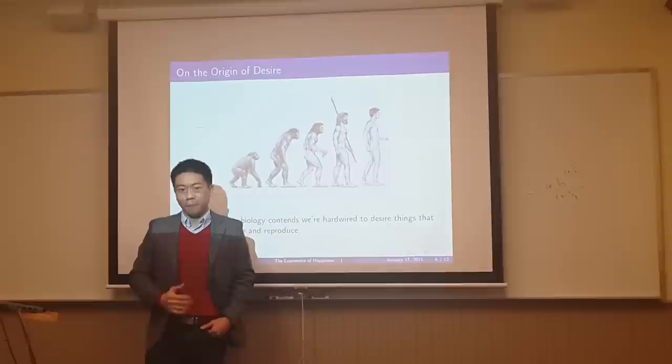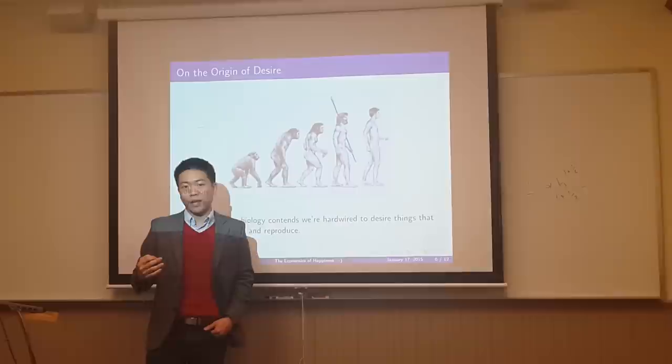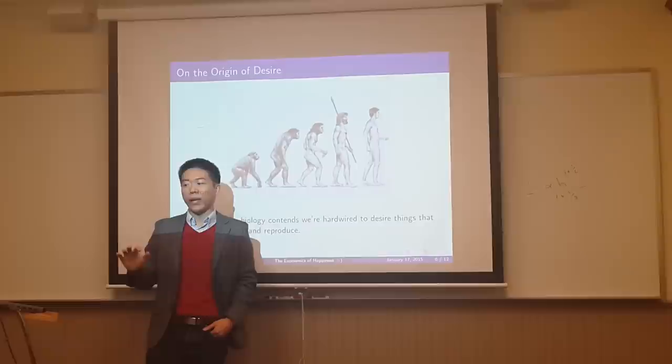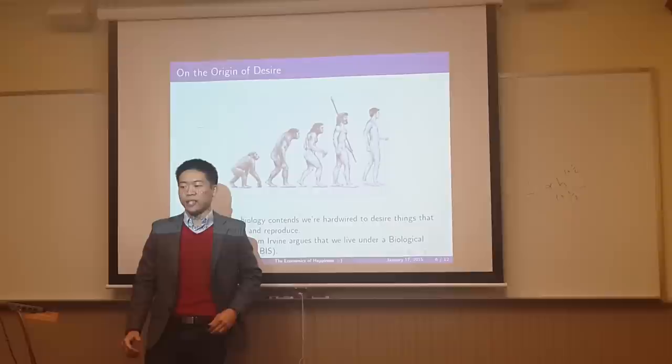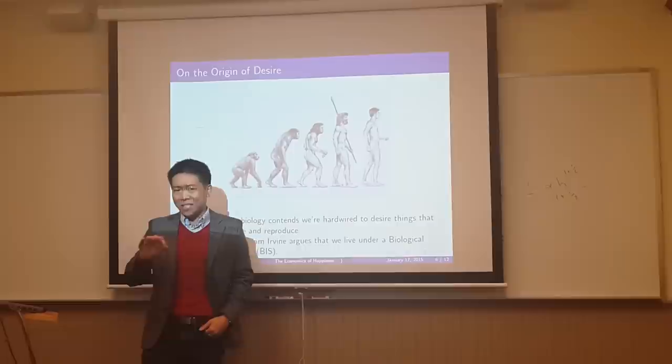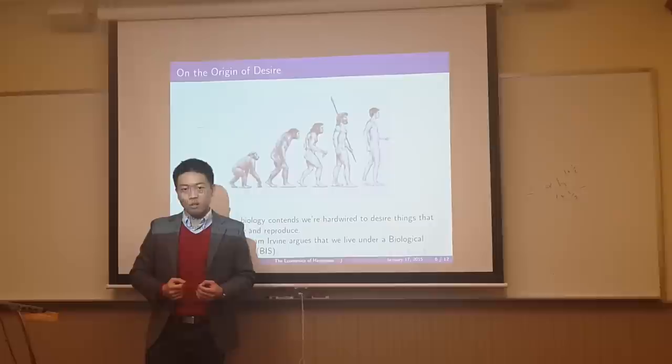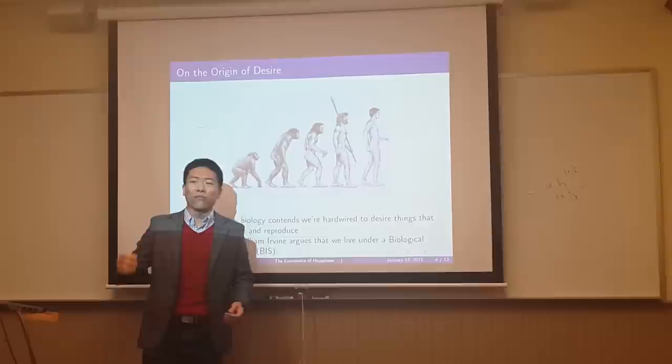But if you turn to science for answers, you start with evolutionary biology. And that discipline contends that we're hardwired to desire things that help us to survive and reproduce. So inside of us, we have an invisible incentive system. The philosopher William Irvine calls it our biological incentive system. And the reason why we have it is because our ancestors that possessed this internal incentive structure, who gravitated towards things that helped them to survive and reproduce, they were better off at passing off their genetic material. And we are the beneficiaries.